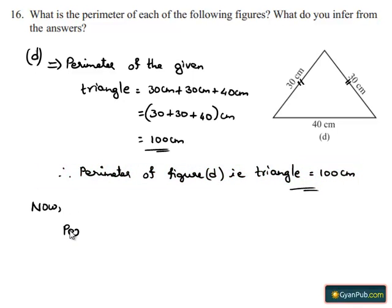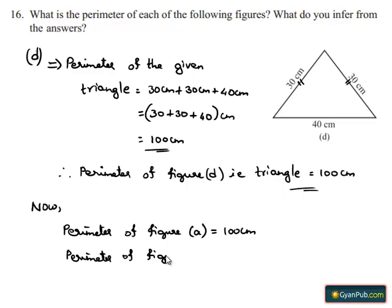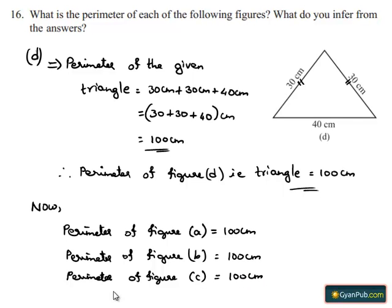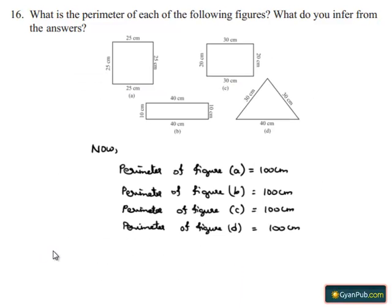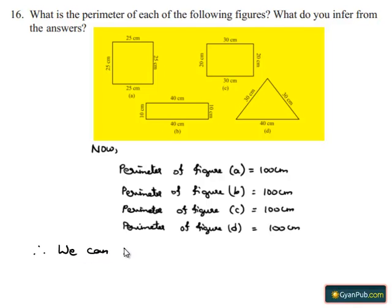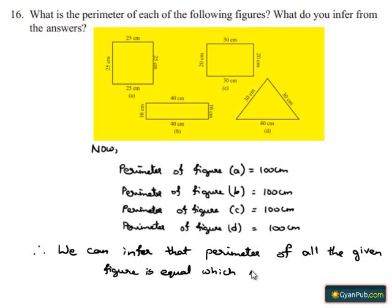Now, the perimeter of figure A is 100 cm, perimeter of figure B is 100 cm, perimeter of figure C is 100 cm, and perimeter of figure D is 100 cm. Therefore, from the above, we can infer that the perimeters of all the given figures are equal, which is 100 cm. Thank you.